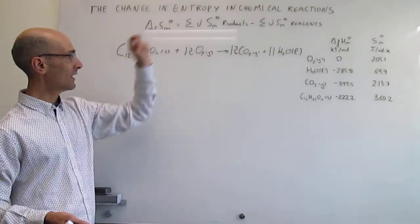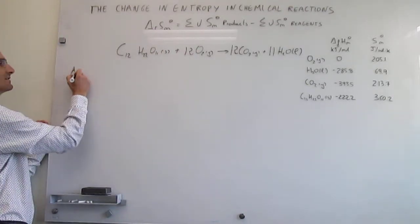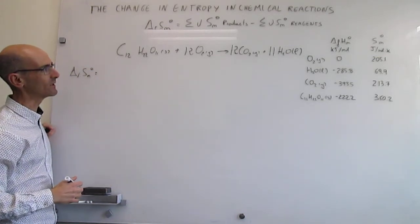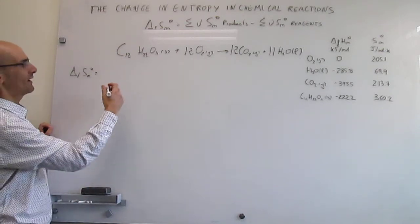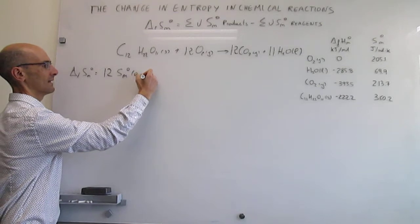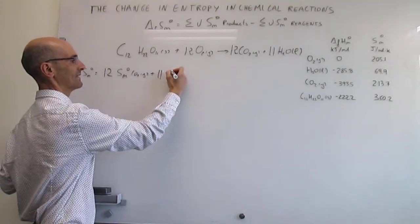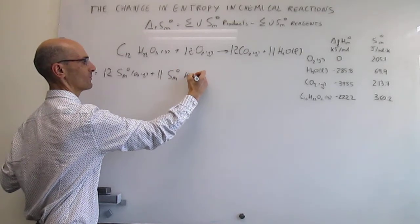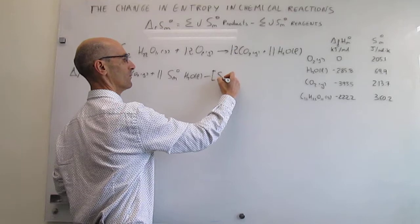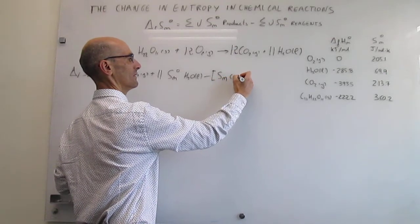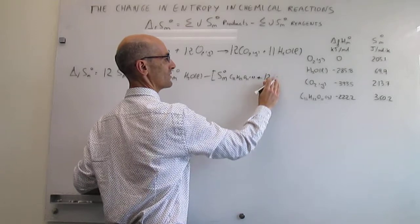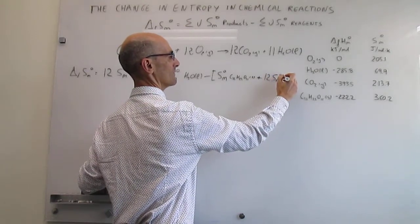We utilize the equation where the change in entropy for the chemical reaction equals the sum of absolute molar entropies of products minus reagents. Starting with products: we have 12 moles of CO2, so that will be 12 times the molar entropy of CO2 gas, plus 11 moles of water, so 11 times the standard molar entropy of water liquid. Then we subtract the molar entropies of reagents: one mole of sucrose C12H22O11 solid, plus 12 moles of O2, so 12 times the molar entropy of O2 gas.